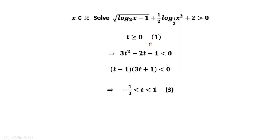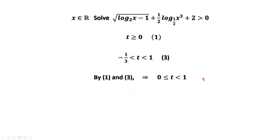We have two results. By definition of t, t is bigger than or equal to 0. From this inequality we have t between negative one third and 1. Combining the two results, we have t is bigger than or equal to 0 and less than 1.